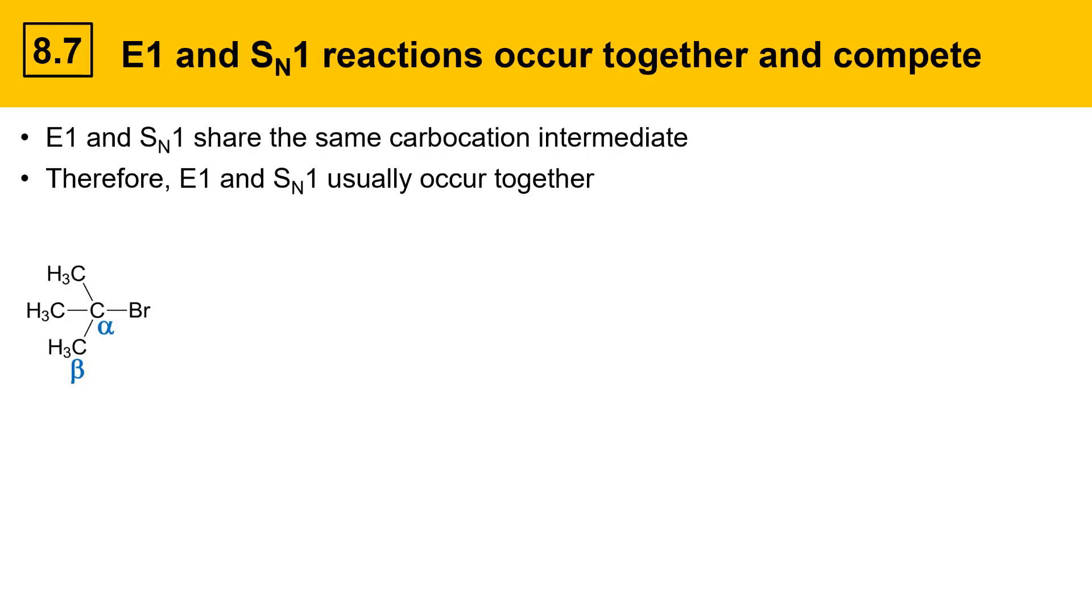Here's an example with a tertiary alkyl bromide. This alkyl bromide has an alpha position, which has the leaving group, and a beta position, which has protons that could be abstracted. E1 and SN1 mechanisms both go through the same first step, which is formation of the carbocation intermediate.